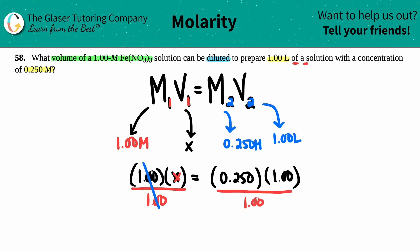So we have this cancels. And look, 1.00 on the top, 1.00 on the bottom, that cancels. So X is 0.250, and now units, it's the volume unit, right? So it matches the volume unit that you gave. So since this is in liters, this has to be in liters. And that's the answer.